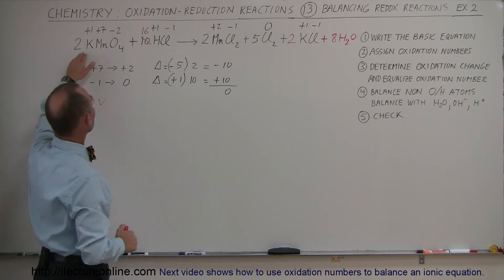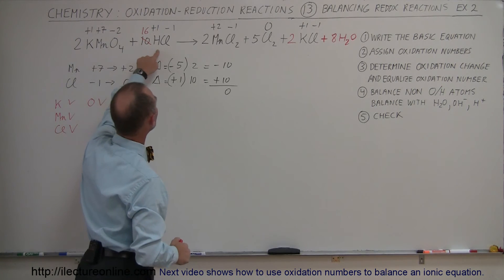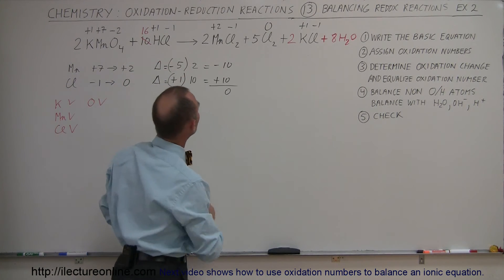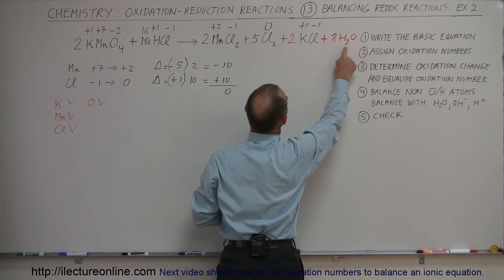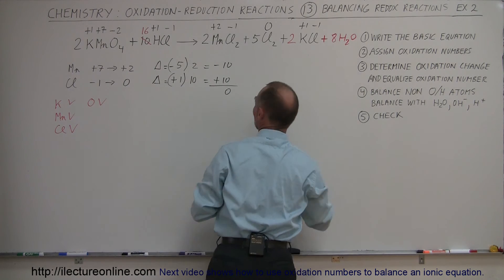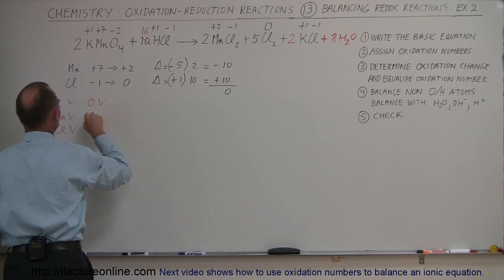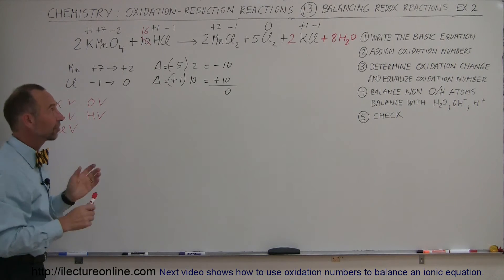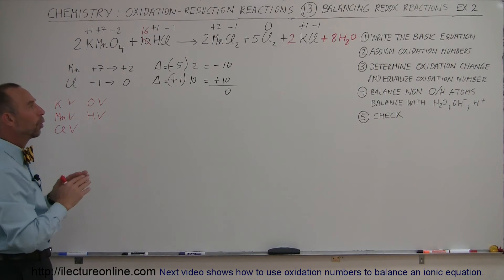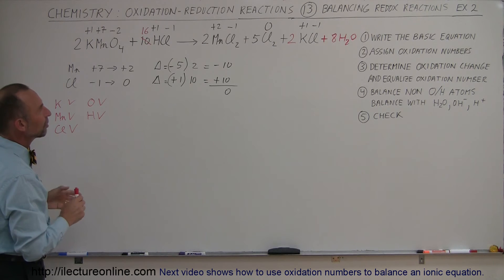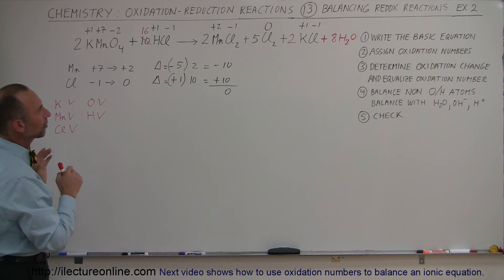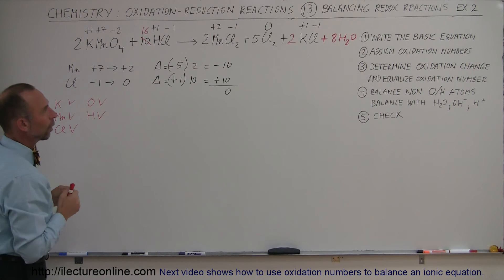Now let's check hydrogen. On the left side we have 16 hydrogens. On the right side, 8 water molecules times 2 hydrogens each is 16. So hydrogen is balanced as well. We have balanced the oxidation numbers, balanced all the elements, and balanced the equation by adding 8 water molecules on the right side.